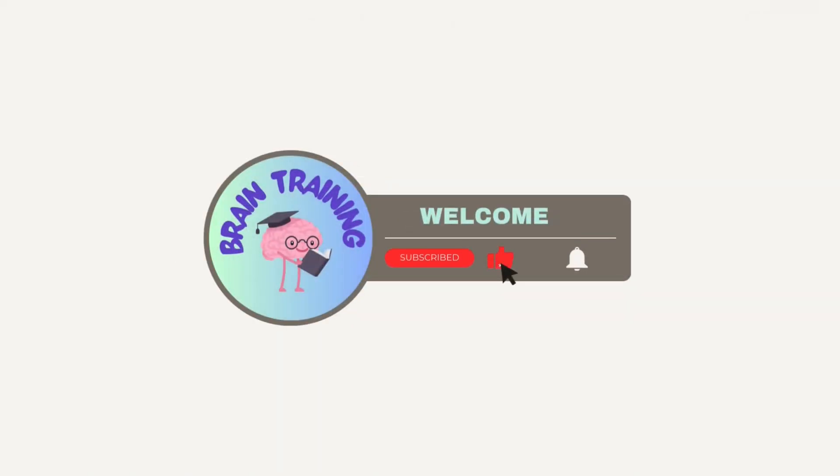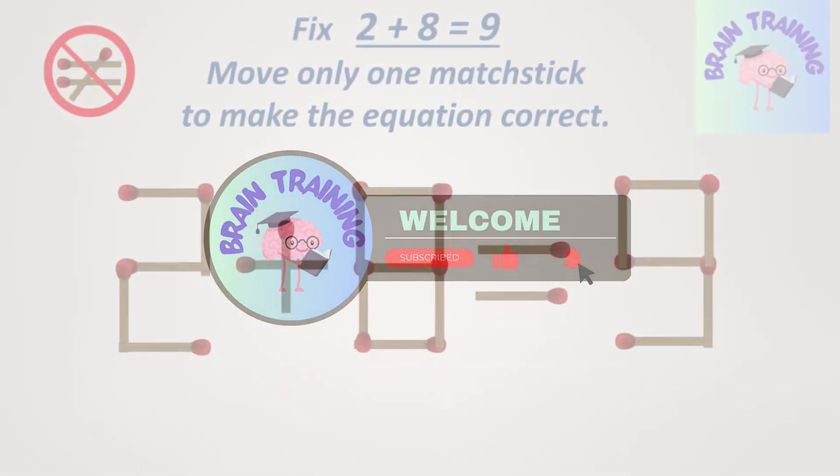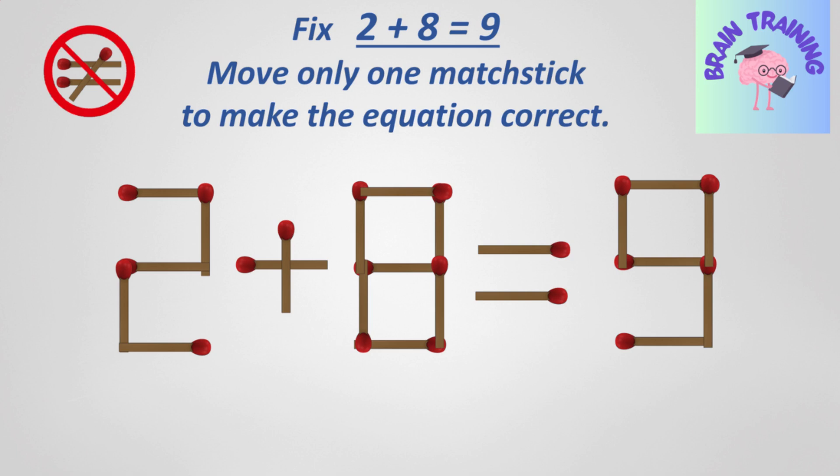Hi Puzzle Enthusiasts! Can you solve this viral matchstick puzzle? The equation 2 plus 8 equals 9 looks wrong, but you only need to move one matchstick to make it correct.